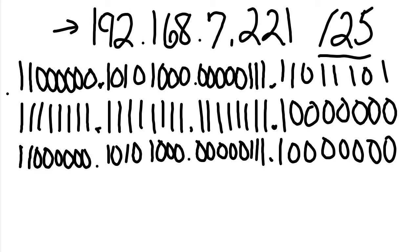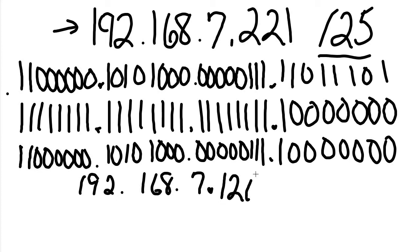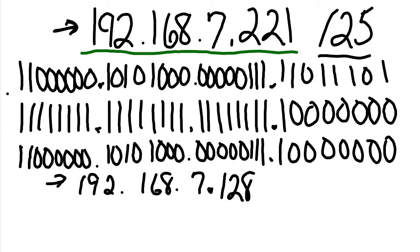So my network address is 192.168.7.128 — converting that last octet from binary 10000000 back to decimal gives 128. Now I compare the network address to the address I started with. If they were the same, this would be a network address. But 128 does not equal 221, so it's not a network address — let's keep looking.